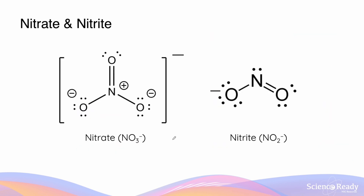It's important to understand where the charge of a polyatomic ion arises from. In the nitrate molecule, nitrogen is surrounded by three oxygen atoms. Two of the oxygen atoms have a formal charge of negative one, and the nitrogen atom has a formal charge of positive one. These add up to a net charge of minus one, which is why nitrate has the formula NO3-. For nitrite, only one of the oxygens is negatively charged, which accounts for the overall charge of minus one.